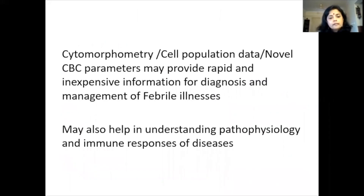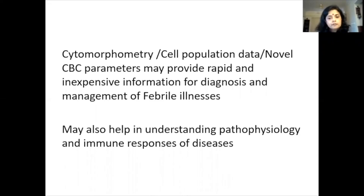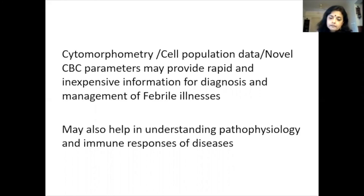Cytomorphometry and cell population data — or novel CPD parameters — may provide rapid and inexpensive information for diagnosis and management of febrile illnesses, as the sessions to come will demonstrate. They may also help us understand the pathophysiology and immune response to diseases. For example, studying HFC may prompt flow cytometry to determine whether these highly fluorescent cells are B or T cells; studying immature granulocytes may reveal what types arise in infections.